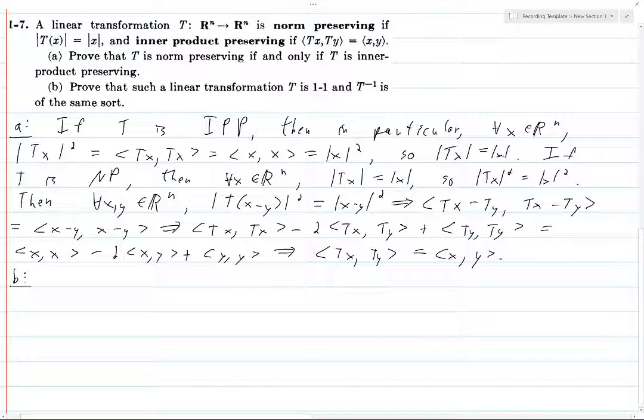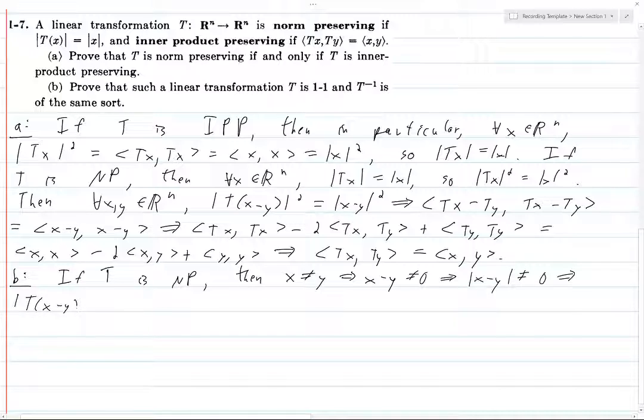Next, if T is NP, then if x is not equal to y, then x - y is nonzero, which means that the norm of x - y is not equal to zero. But this is norm preserving, so |T(x-y)| is not equal to zero. But that can only happen if this thing on the inside is nonzero. That means, well hey, Tx is not equal to Ty.